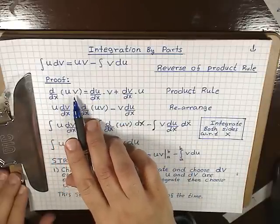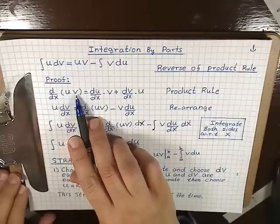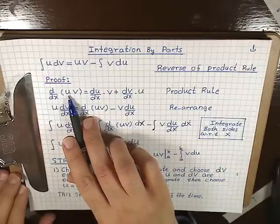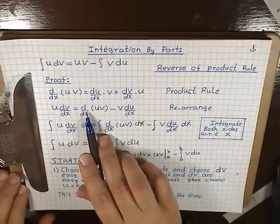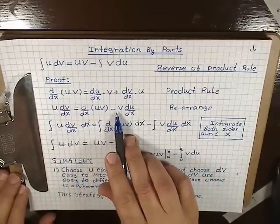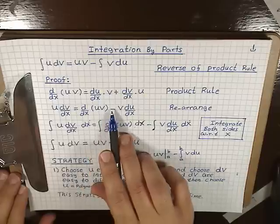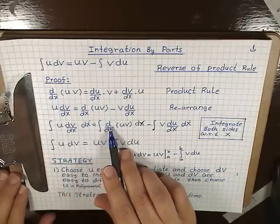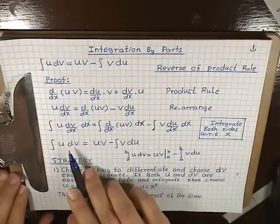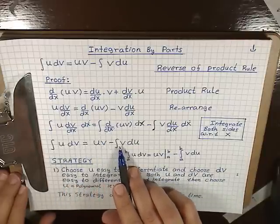d/dx of uv equals du/dx times v, plus dv/dx times u. Rearranging, we get u dv/dx equals d/dx of uv minus v du/dx. Integrating both sides, the dx's cancel out, and the integral cancels out the derivative, leaving us with the formula: integral of u dv equals uv minus integral of v du.